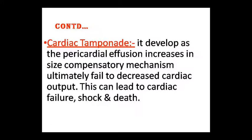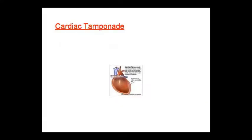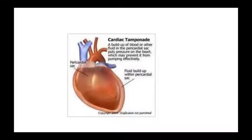Cardiac tamponade can develop as a complication. Because of the compensation mechanism, the size of the pericardial sac increases and cardiac output decreases. This can lead to cardiac failure, shock, and death. In cardiac tamponade, blood or fluid accumulates in the pericardial sac, which prevents the heart from pumping effectively, and fluid build-up from pericarditis contributes to this.